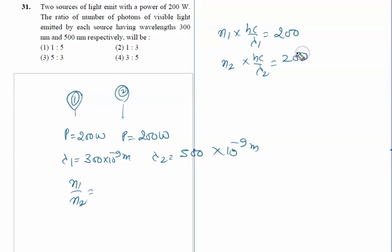If we divide both equations, hc cancels and 200 cancels. We can write n1/n2 = λ1/λ2, which is (300 × 10^-9)/(500 × 10^-9).